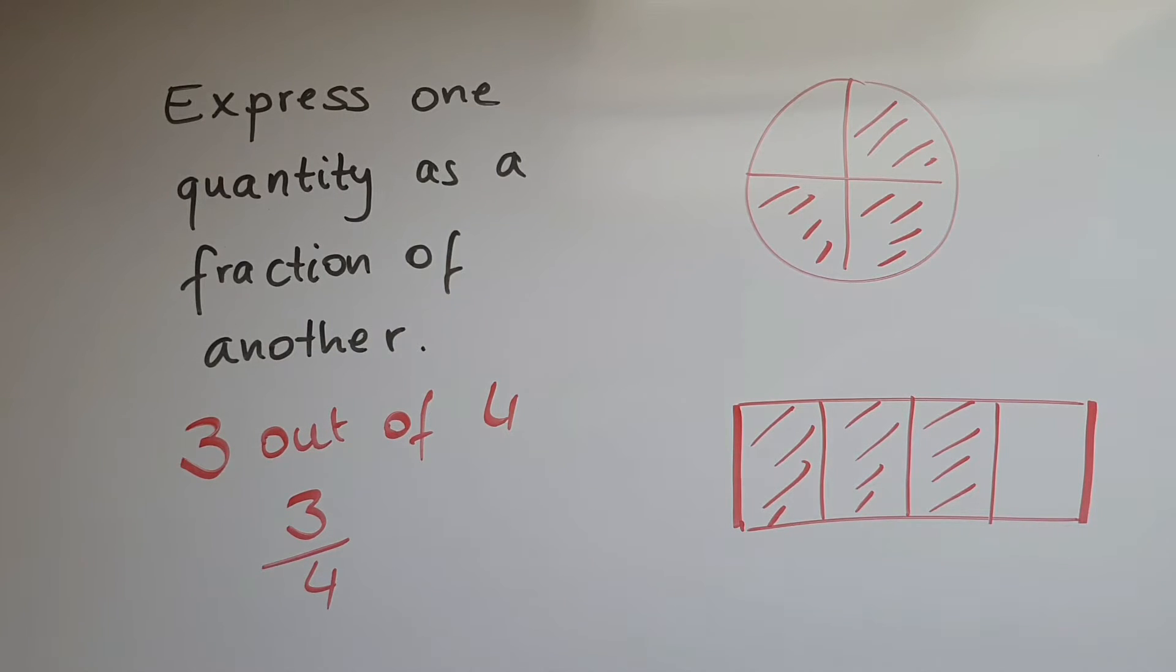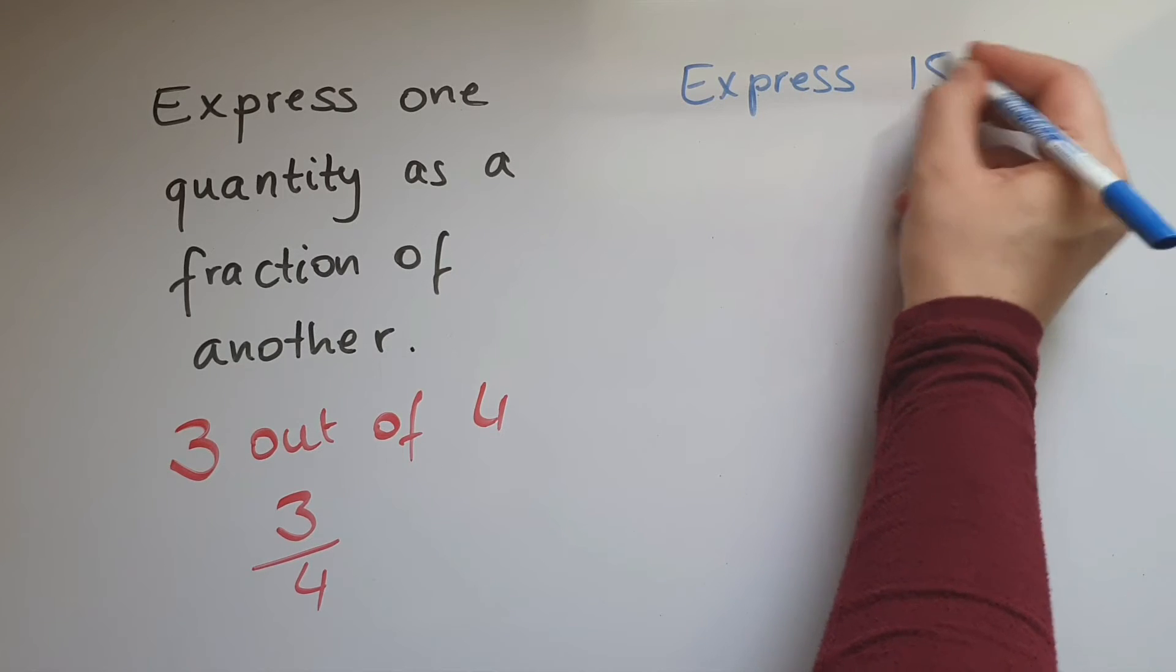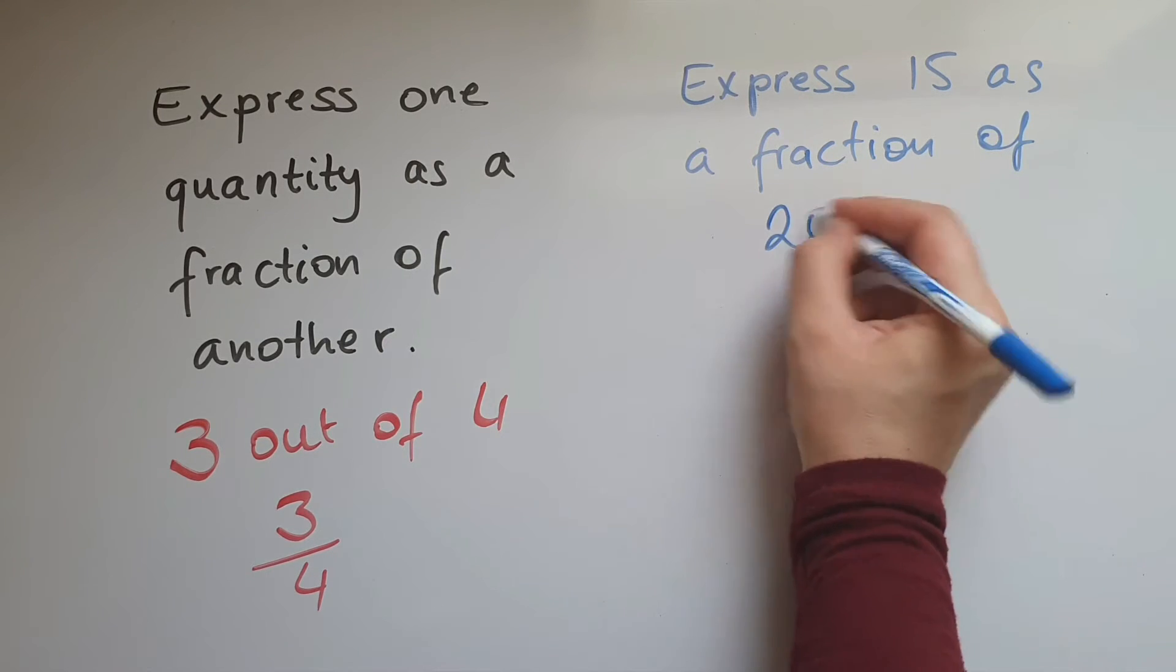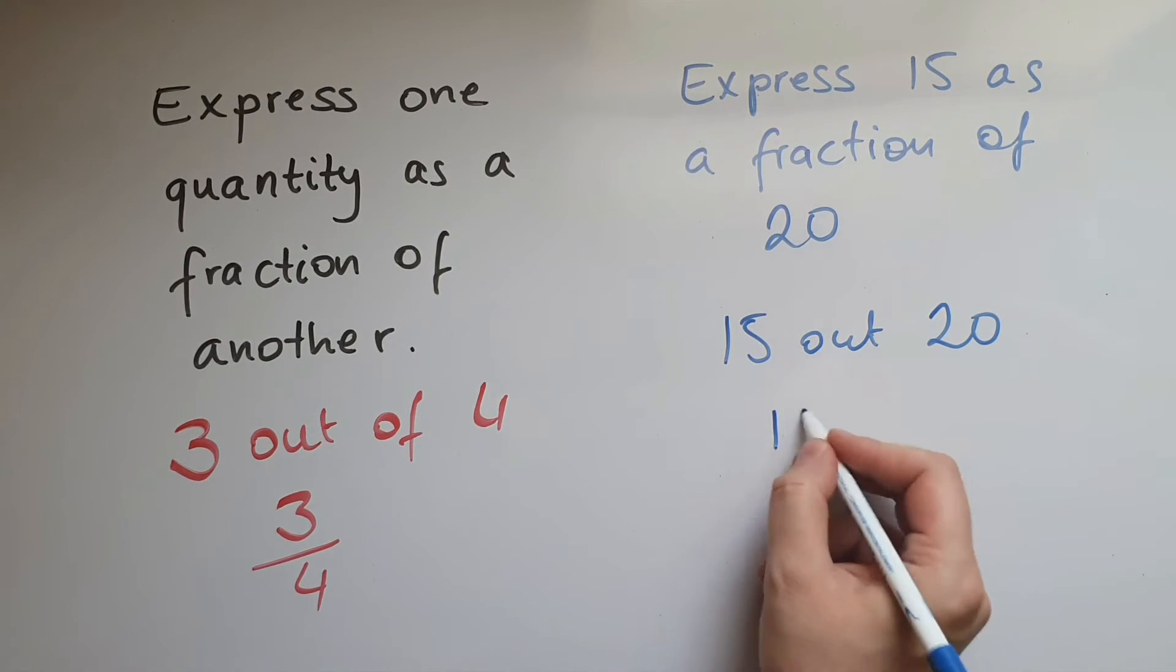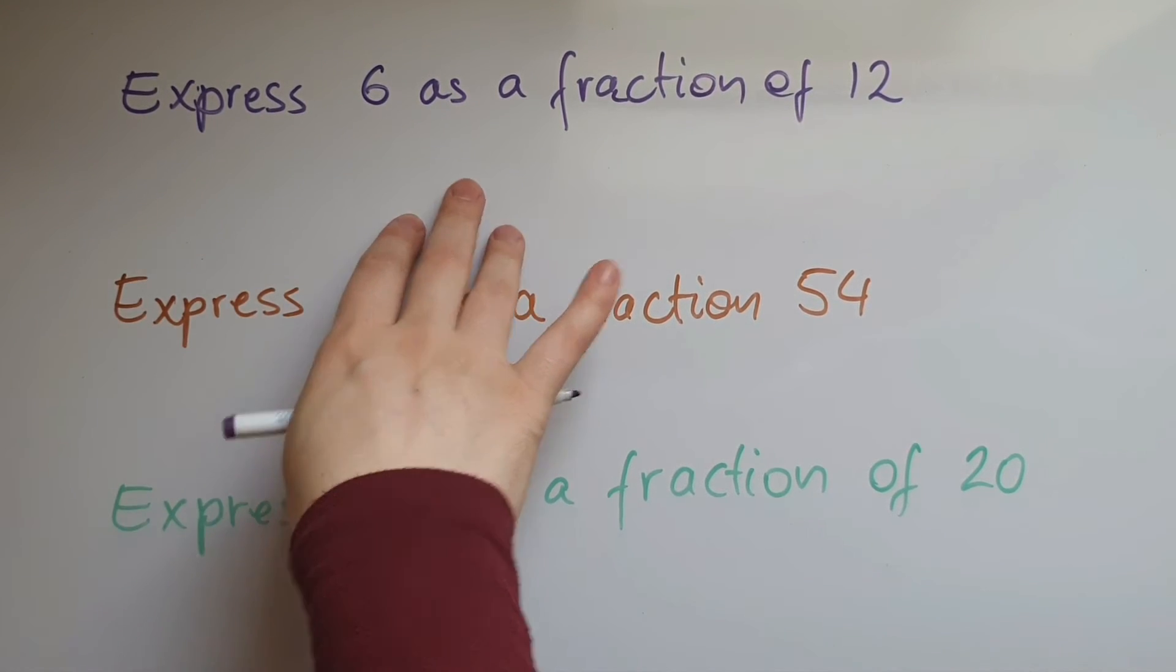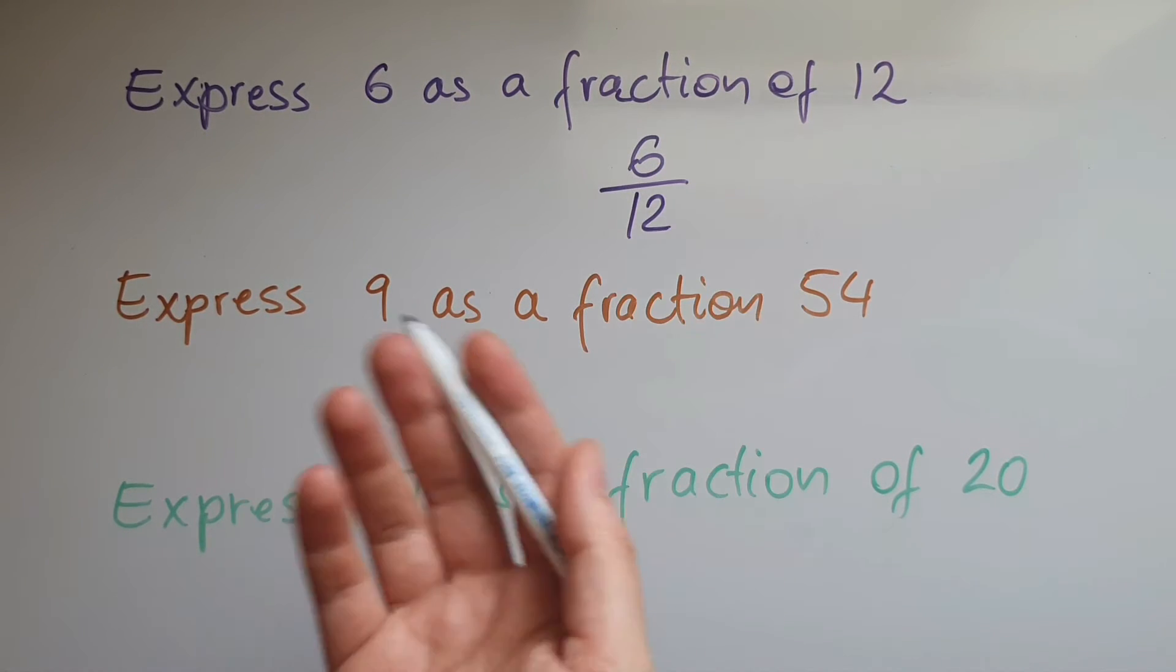If we're asked to express 15 as a fraction of 20, for example, what we're going to do is 15 out of 20, in short 15 over 20. That's it, that's the job done. You can simplify it further because you can divide both of these by 5 to get 3/4.